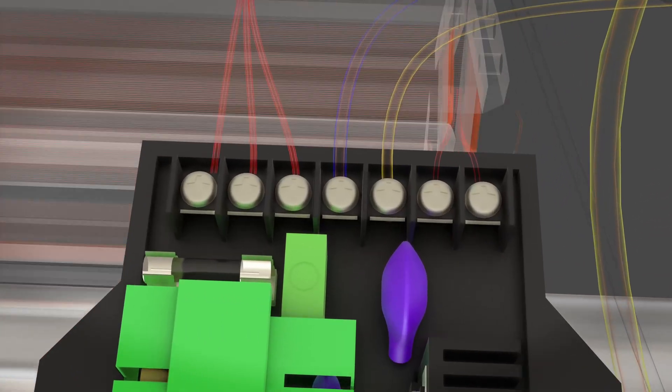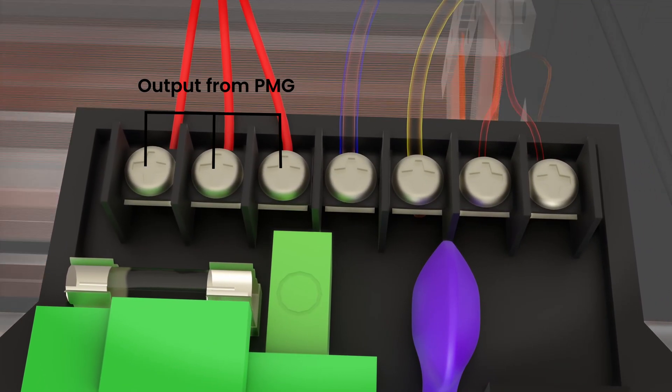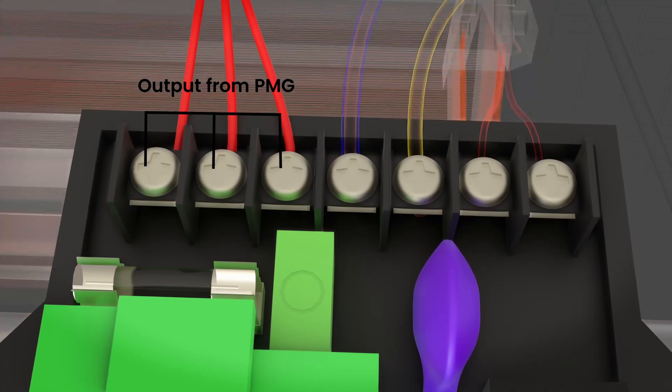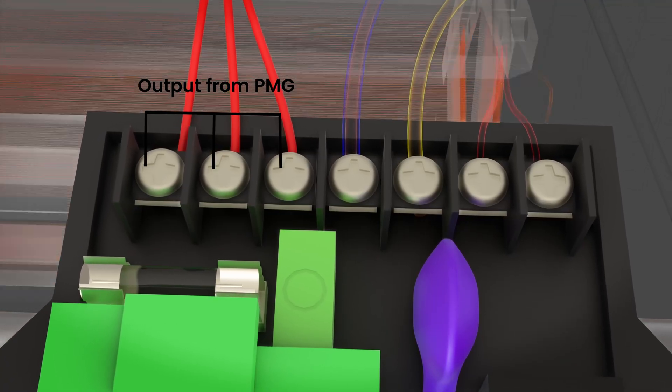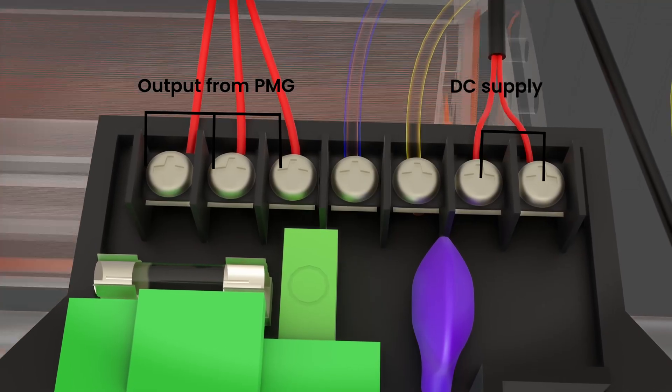The AVR receives three-phase electricity from the PMG. The AVR converts this three-phase AC electricity into regulated DC current using internal rectifier circuits. This converted DC current is supplied to the exciter stator field winding.